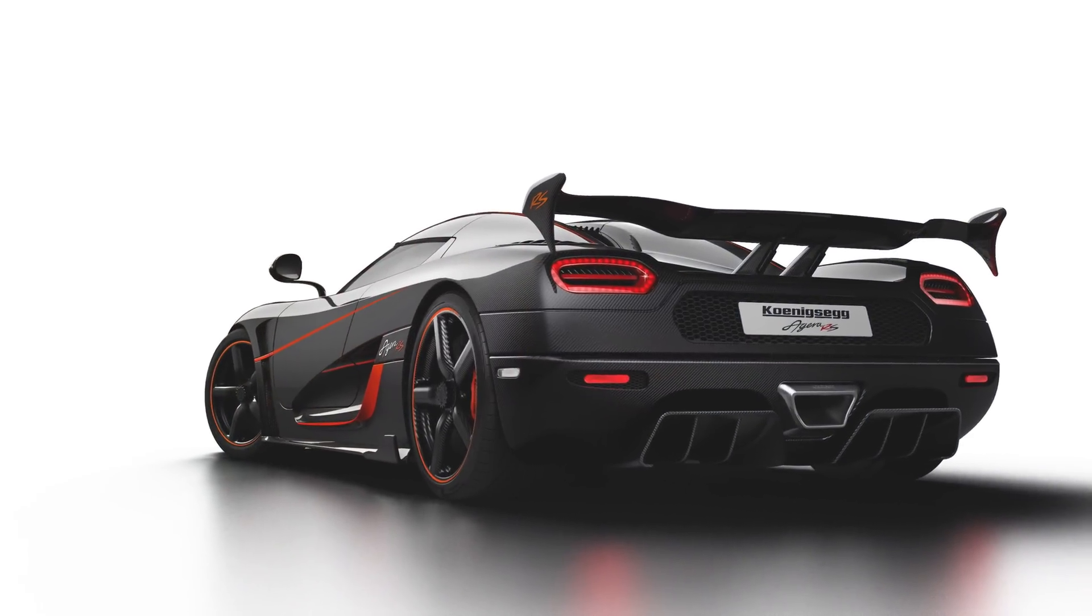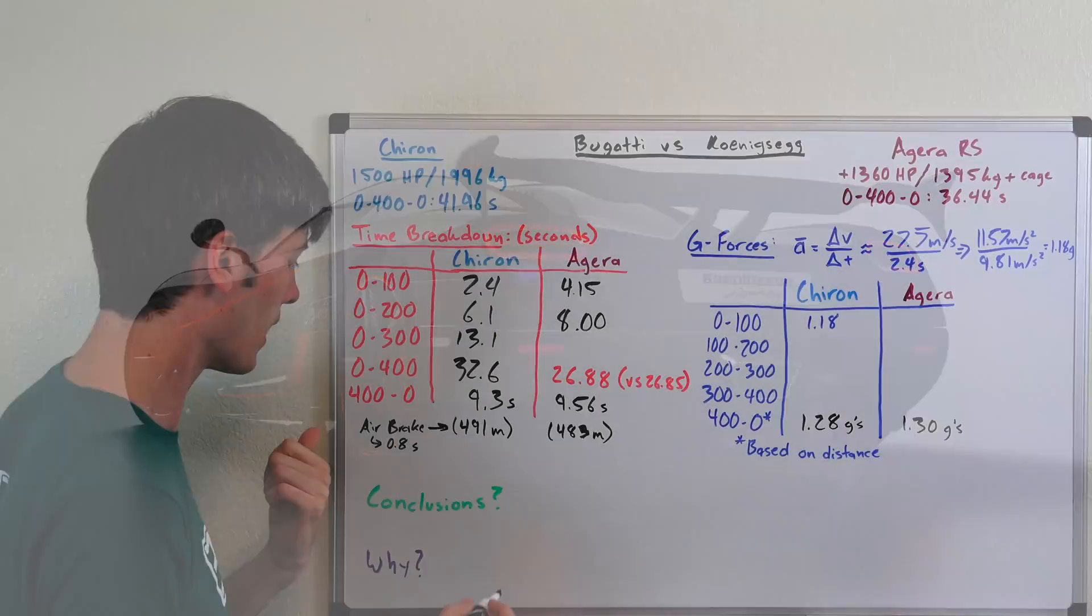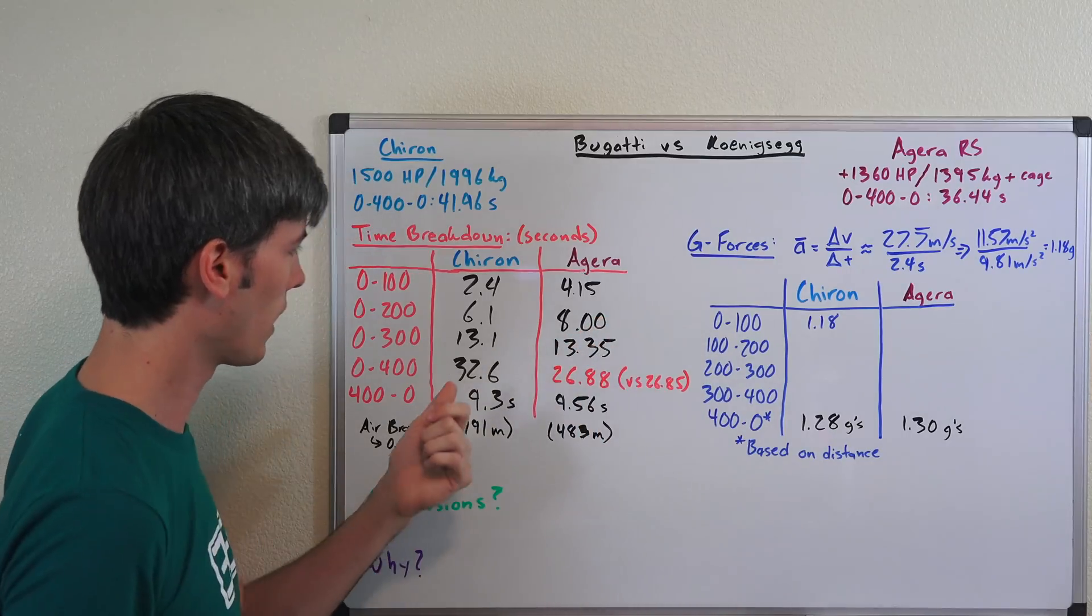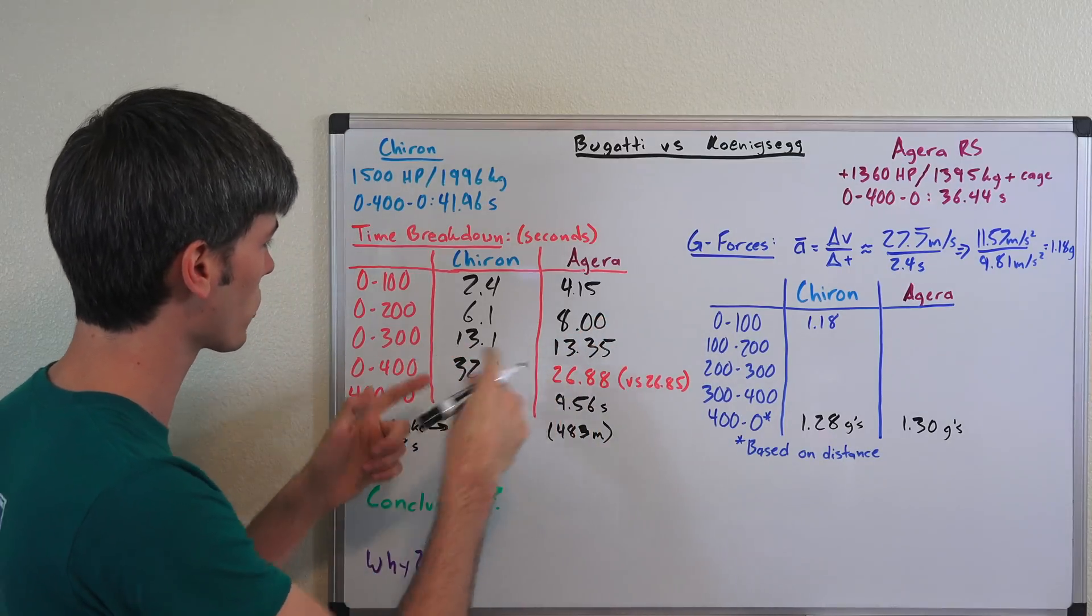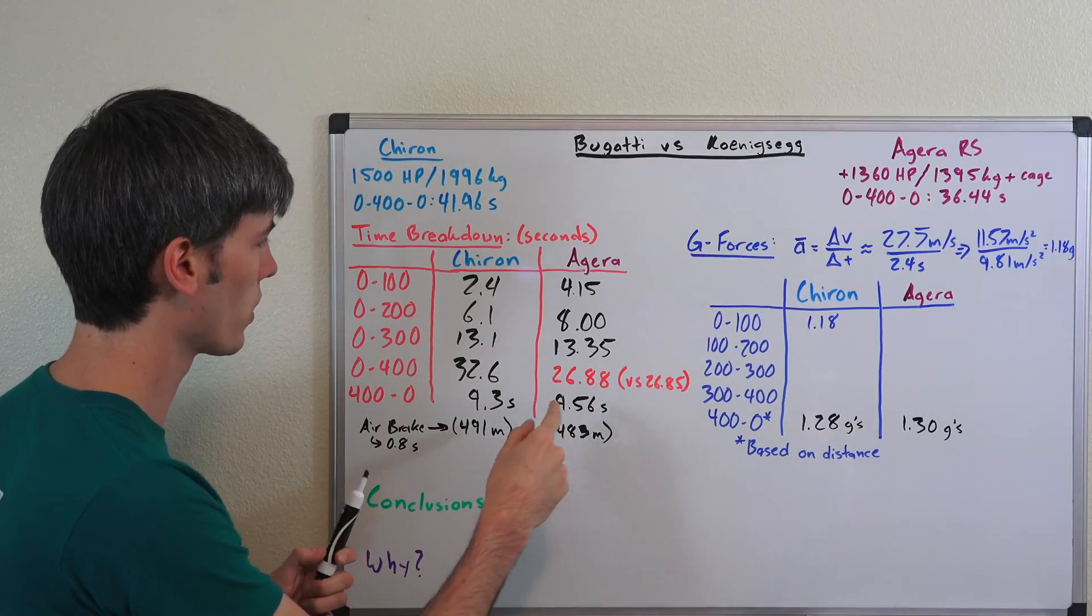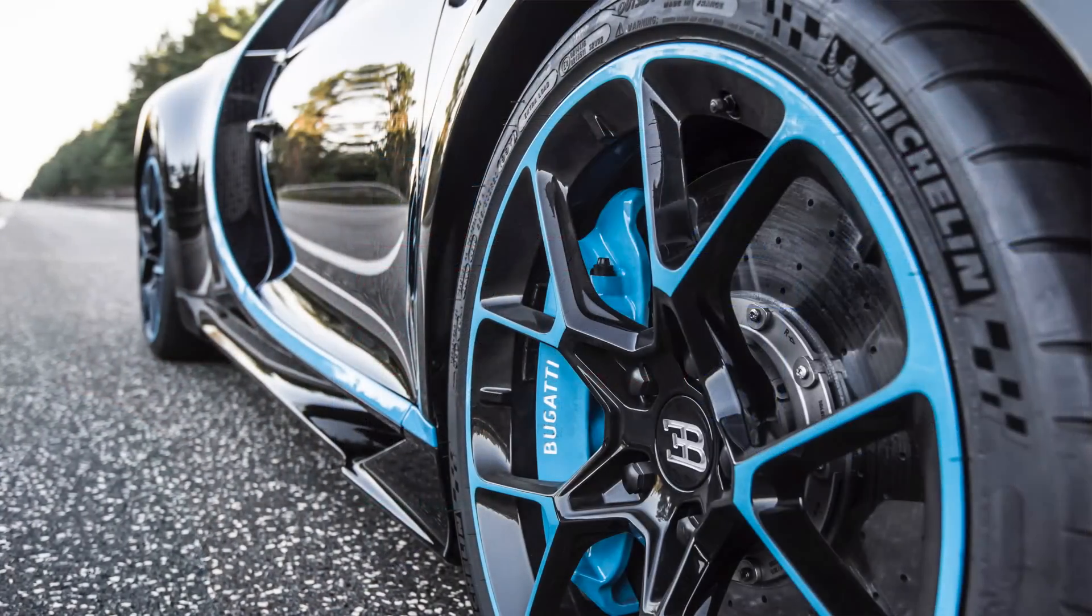They said they were getting wheel slip as high as 180 kilometers per hour. 0 to 300, the time here is 13.35, so about dead even once they get to 300 kilometers per hour. Bugatti still has a slight edge and then they're significantly quicker to get to 400, 26.88 versus Bugatti's 32.6.